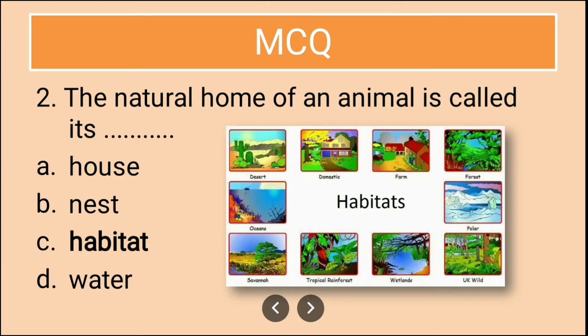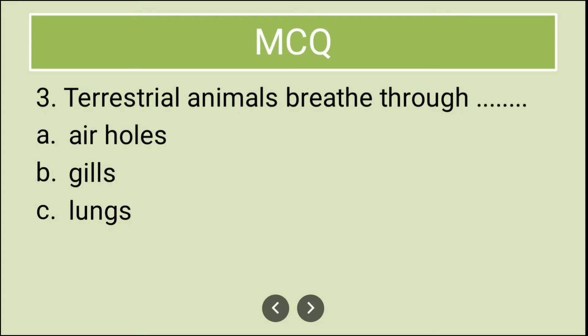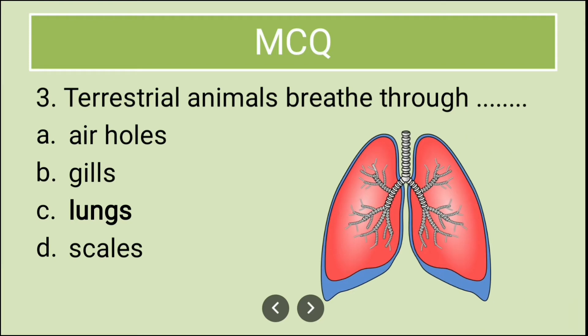The next question is: terrestrial animals breathe through their dash. The options are air holes, gills, lungs, and scales. The correct answer is lungs. Terrestrial animals breathe through their lungs.